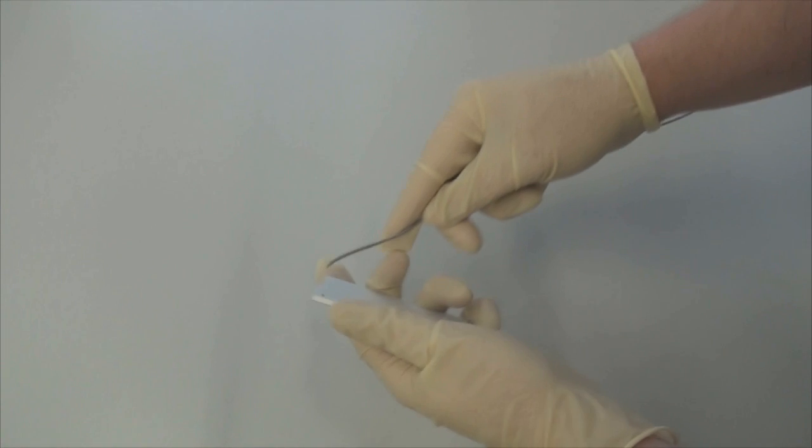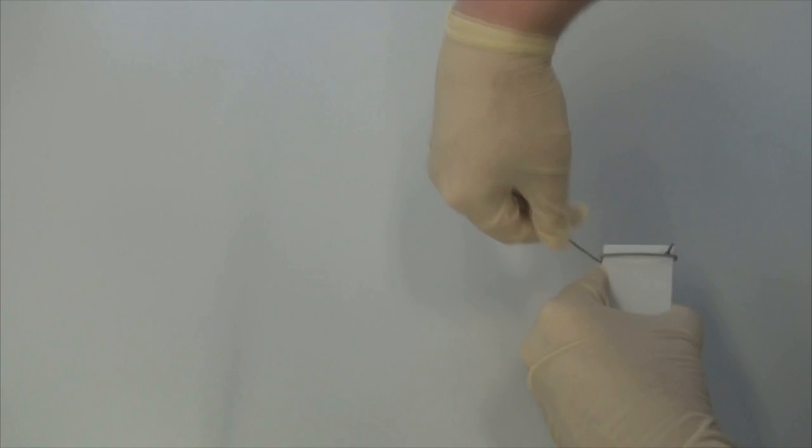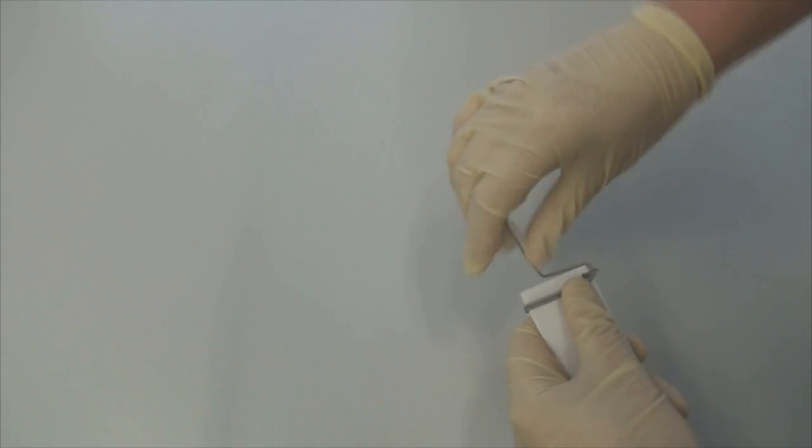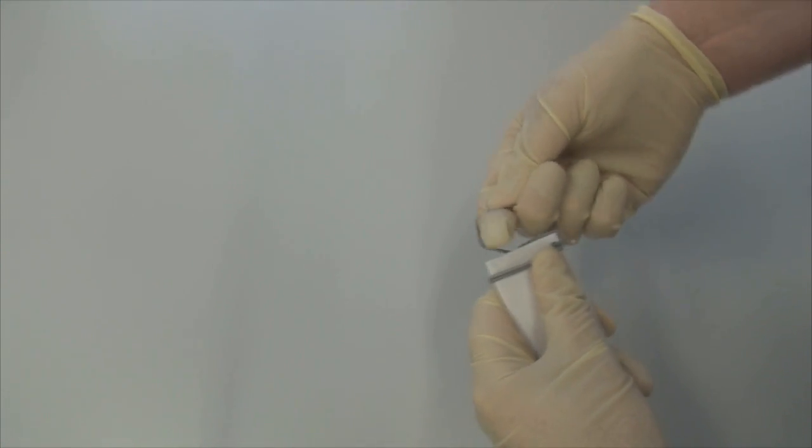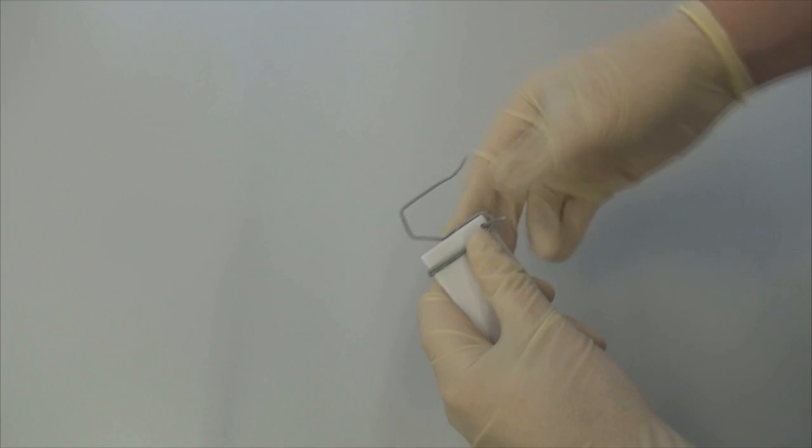Before starting with the pretreatment, I'll attach the aluminum plate on a wire made out of the same material. That way I'll prevent the contamination of the plate as I no longer need to touch it. This wire will also serve as the electrical connection in the anodizing process.